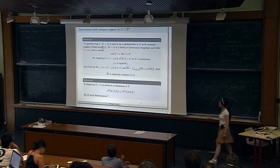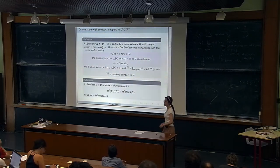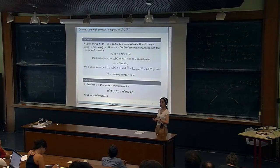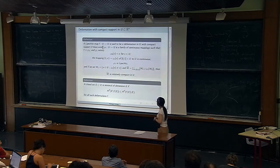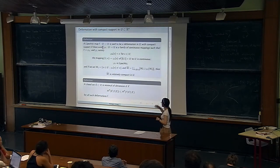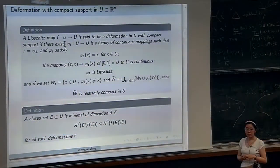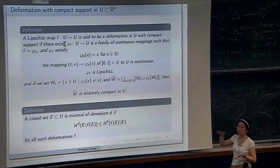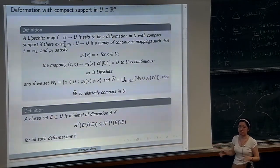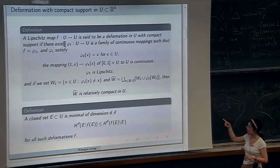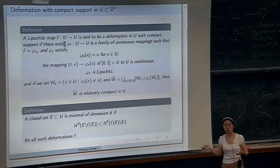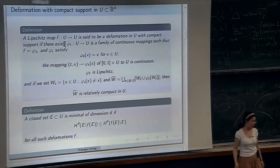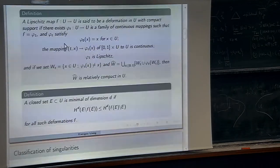We also have the definition for minimal sets in a domain U. Before, we introduced the definition in R^n. For a domain U, we ask the same thing: the set minimizes measure among all its deformations, but the deformation should be a deformation in the normal sense — there must exist a homotopy to the identity map inside the region. Before, we did not ask that because the homotopy group in R^n is trivial.